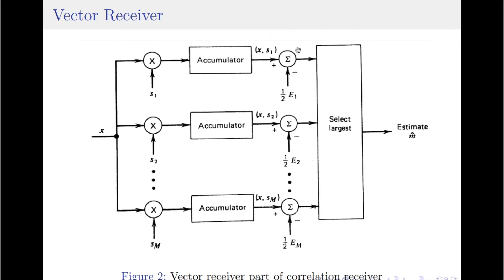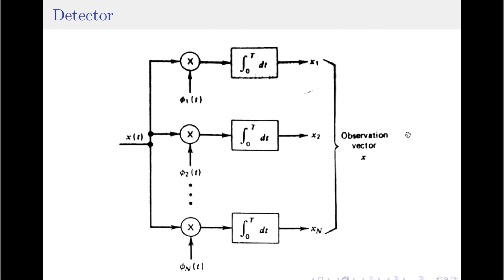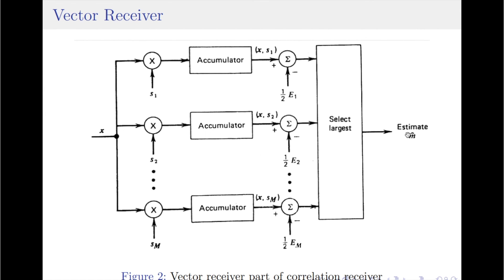Finally, the system compares the outputs from each branch and selects the largest, which is why we have a block labeled 'select largest.' This creates a corresponding decision on the transmitted message signal, represented as the estimate M-hat. For illustration, consider that the transmitted signal was S1 of t. As per the maximum likelihood detector principle, if S1 of t was transmitted, then the number produced by the first or uppermost branch of the vector receiver will be the largest. Hence, a decision is made in favor of signal S1 of t, or symbol M1, so M-hat equals M1. The optimum receiver consisting of both the detector part and the vector receiver part is called the correlation receiver.